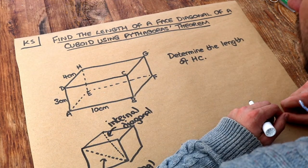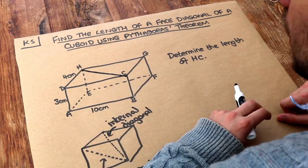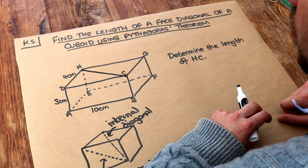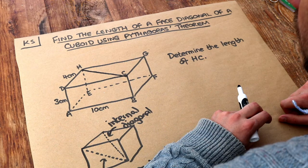So we want to find the length of HC. Where is that length? Well it's here, isn't it? That length there. And if it's a face diagonal, all we need to do is just identify the appropriate right-angled triangle and then think about what lengths we know.